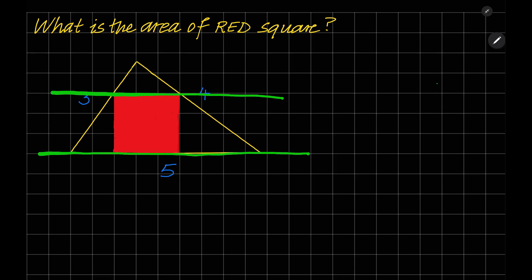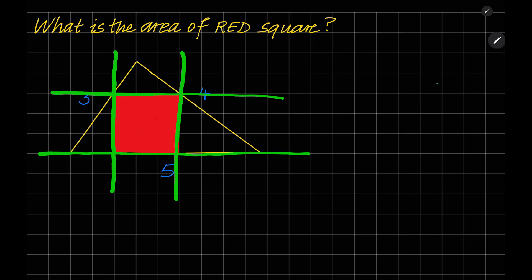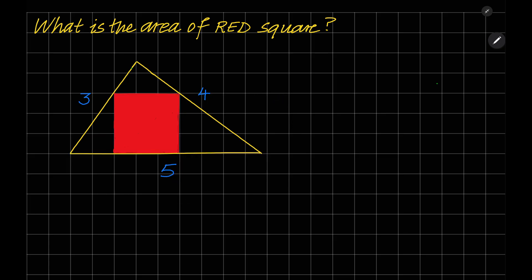Please note that this line is parallel to this line, and also this line is parallel to this line. The triangle ABC is the smallest right triangle with integer sides — 3 squared plus 4 squared is equal to 5 squared.